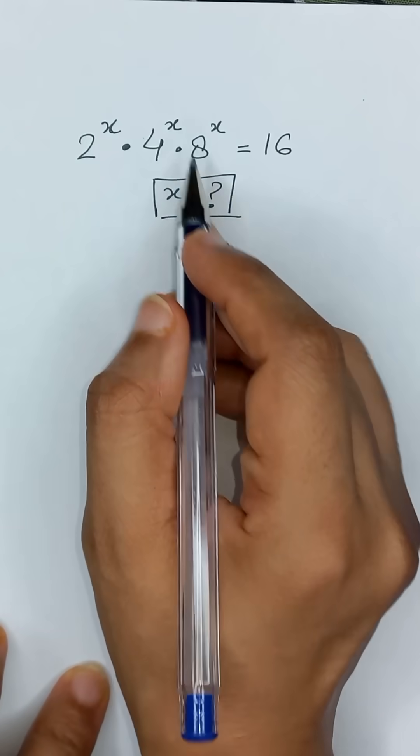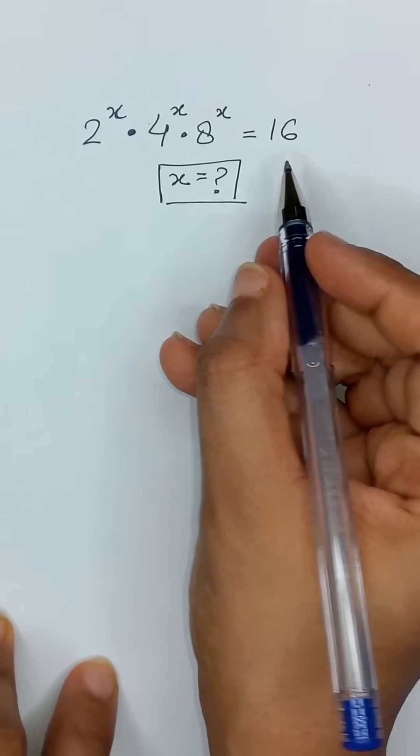2 to the power x times 4 to the power x times 8 to the power x is equal to 16.